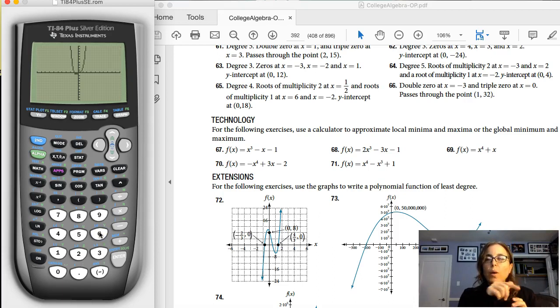Yeah, so it doesn't quite look like a W because I just have the x to the 4th and the x terms. I don't have the x cubed, the x squared, or the constant, and it's when you add those in that you really start to get the W.